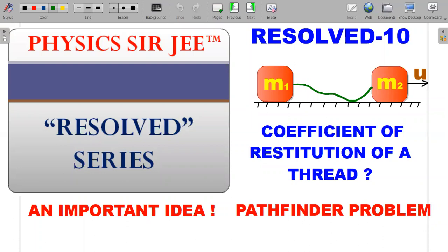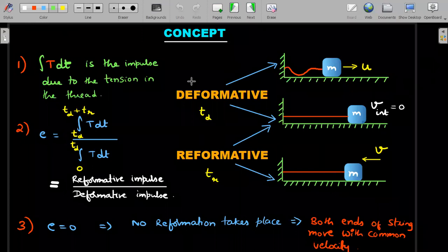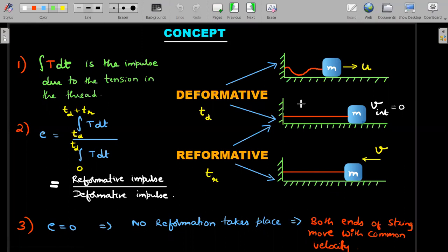This is slightly less heard of. We generally talk about coefficient of restitution when collision happens between two blocks. On the screen there are two blocks connected by a thread and one of the blocks is given a rightward velocity with speed u. If someone talks about the coefficient of restitution of thread in this scenario, what does it mean? I'll explain the concept first, then we'll take up the pathfinder problem. It's nothing different from how we define it for collision between two blocks.